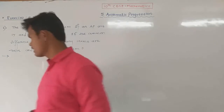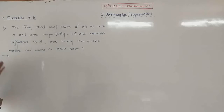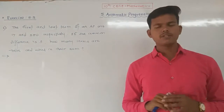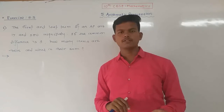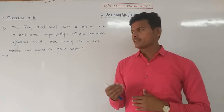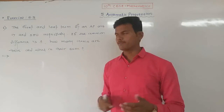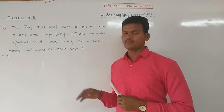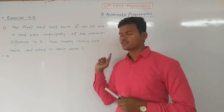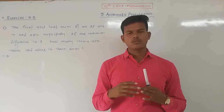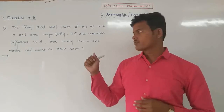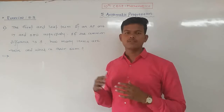Question number 6: the first and the last term of an AP are 17 and 350. The first term is denoted by A and the last term by AL. The AP is finite, so the last term is denoted by AL. If the common difference D is 9, then how many terms are there? We have to find the value of N and the value of S_N.